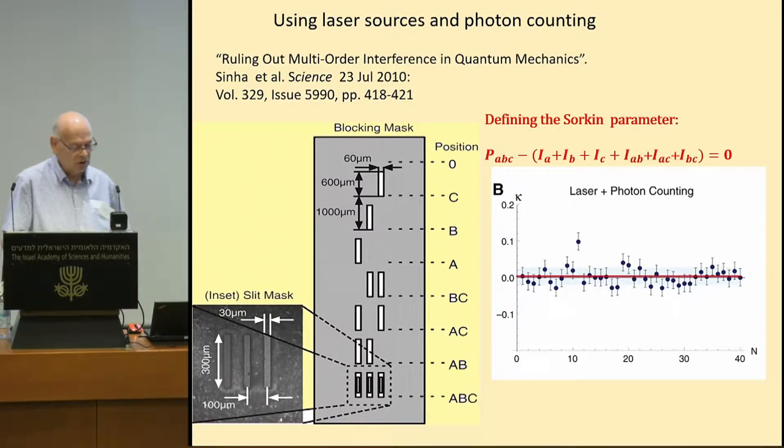And if there is any deviation, we call it a Sorkin parameter. And we can measure the Sorkin parameter and see if indeed this Bohr hypothesis of squaring the wave function is true or false.